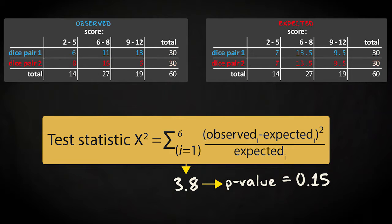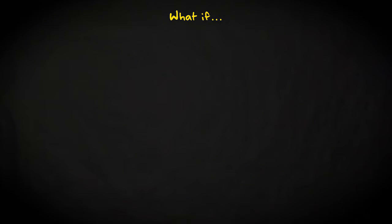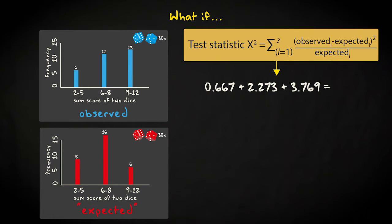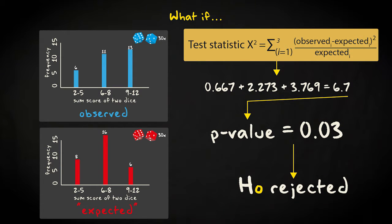Let's also look how far off we would be if we would erroneously assume that the outcome of the second pair of dice would represent the expected distribution. We would then just apply this equation for the chi-squared statistic, and it would lead to a value of 6.7 and a p-value of 0.03. So you would then falsely reject the null hypothesis.